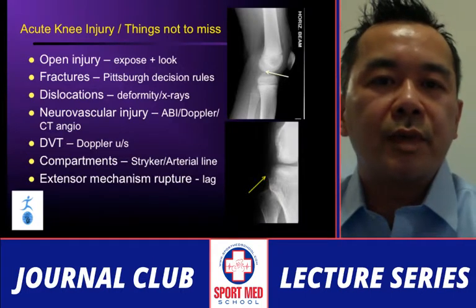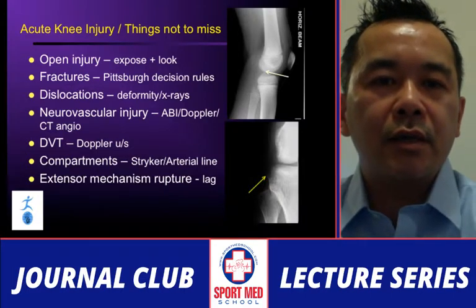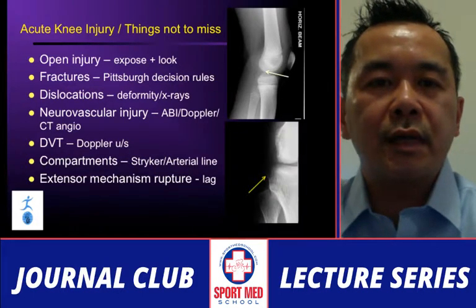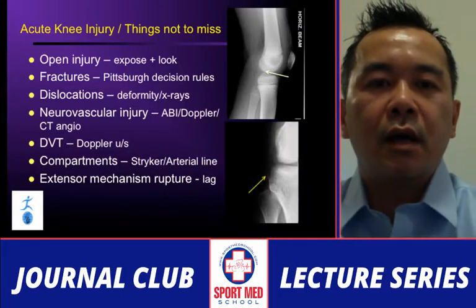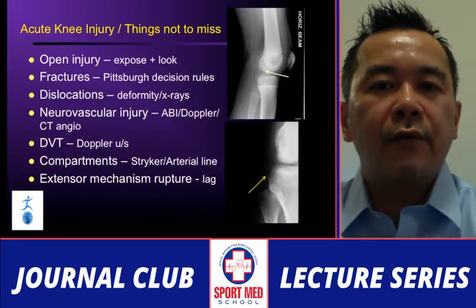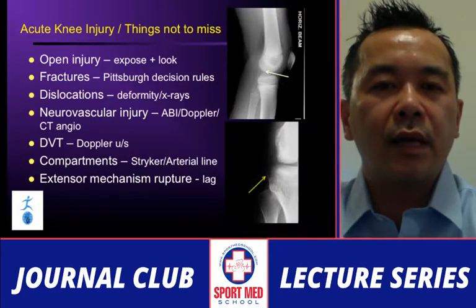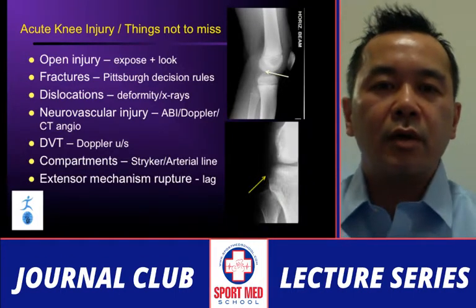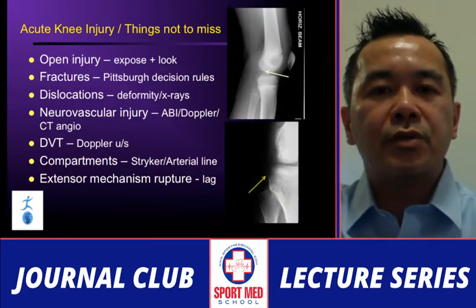Look for fractures using Pittsburgh decision rules — if they can't walk and have a swollen knee, get an x-ray; don't miss fractures. For dislocation, compare both sides, expose both knees, look for deformity, and get x-rays if there's any doubt about normal knee alignment. Address the joint above — the hip — as well as the ankle, and make sure there are no radiating, compromising, or distracting injuries.